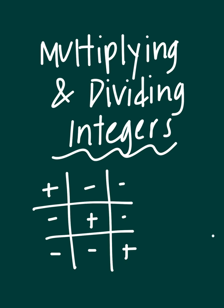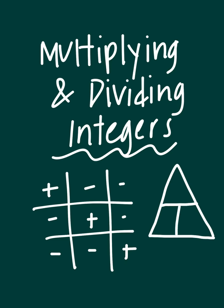Then you also have the triangle method. Make a T inside of it — plus up top, minuses everywhere else. When you multiply or divide two negatives, you're left with a positive. When you multiply or divide a positive and a negative, you're left with a negative. Basically, if the signs are the same, you're going to get a positive answer.